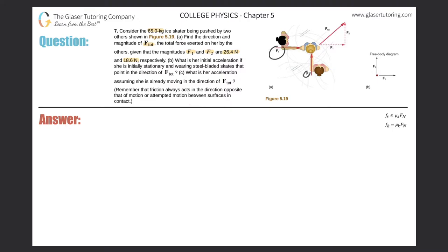F1 and F2 are perpendicular to one another, so they create a right triangle. Using our knowledge of vectors from prior chapters, I draw a triangle where the resultant vector is F_total. F1 is 26.4 newtons and F2 is 18.6 newtons, and our job is to find the resultant — the hypotenuse.